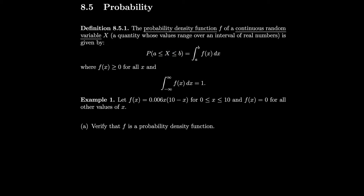Let's do an example. Let f of x equal 0.006 times x times (10 minus x) for x between 0 and 10, and f of x equals 0 for all other values of x. Let's verify that f is a probability density function.